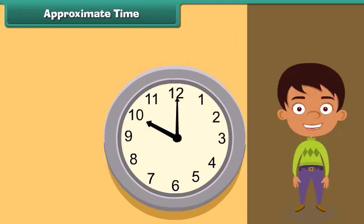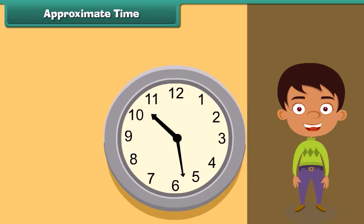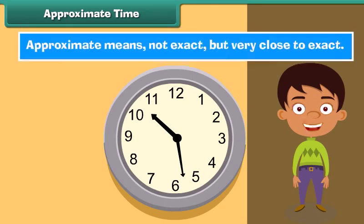Approximate time. Look at the clock face — can you tell the time? It is not yet 10:30, but it is very close to 10:30. So the approximate time is 10:30. Approximate means not exact, but very close to exact.